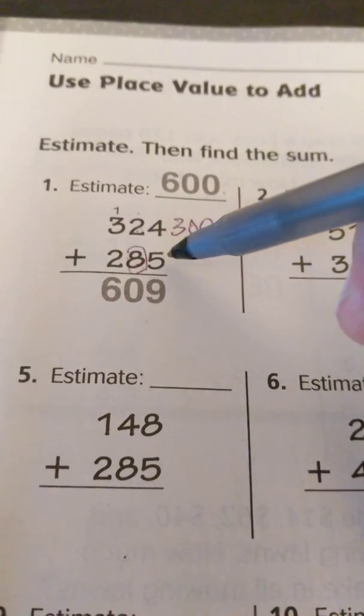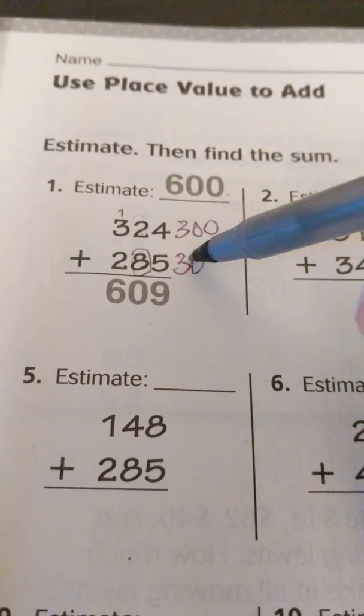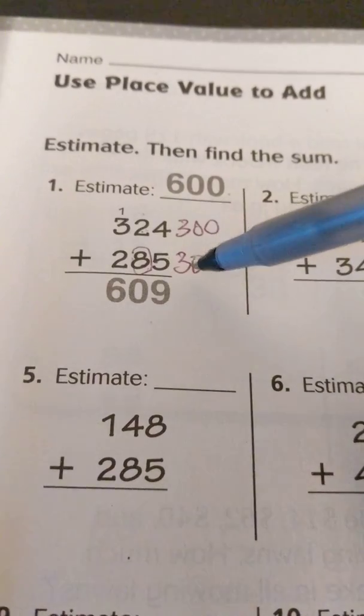So the eight makes this turn to 300 as well, because 285 is closer to 300 than it is to 200.